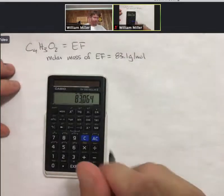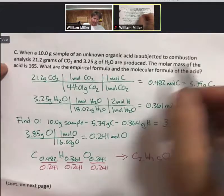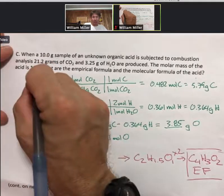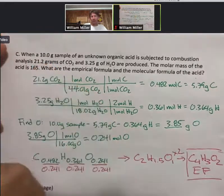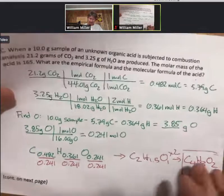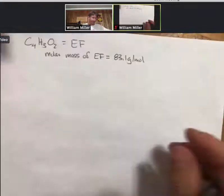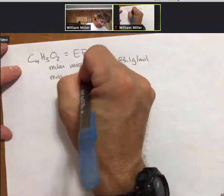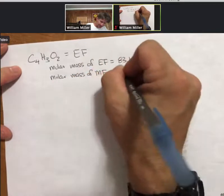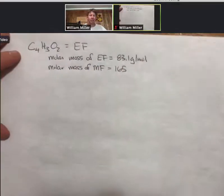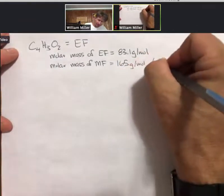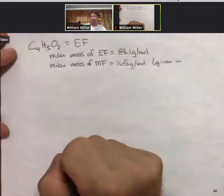Okay. Given in the problem statement is that the molar mass of the acid is 165, and what you have to know is that is going to be the molar mass of the molecular formula. So the molar mass of the molecular formula is 165 grams per mole. And that's given in the problem statement.